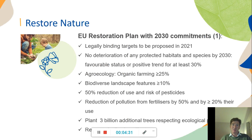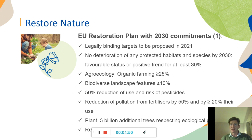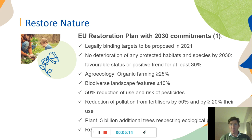In addition to protecting nature, the biodiversity strategy also emphasises the importance of restoring nature — basically restoring the damage that's already been done. The idea is to have legally binding targets for restoration proposed next year, with no deterioration of protected habitats and species by 2030. It would also address agro-ecological measures, including a greater proportion of organic farming, a reduction in the use and risks of pesticides, reduction of pollution from fertilisers, and planting 3 billion additional trees that respect ecological principles.